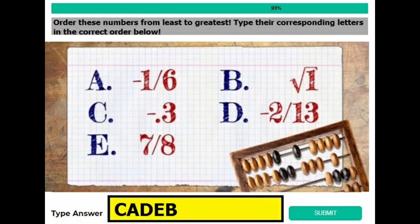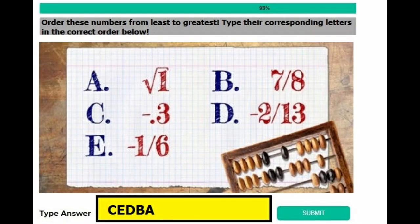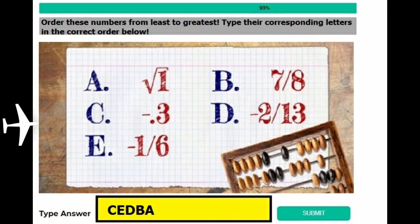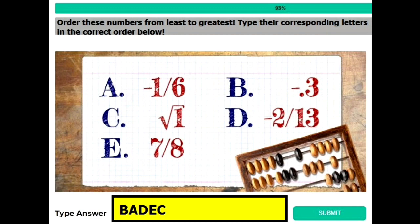For example, in version 1, I have written C as the first letter as minus 0.3 is the smallest, and B as the last as root 1 is the largest number. Similarly, in version 2, I have written C as the first letter as minus 0.3 is the smallest, and A as the last letter as root 1 is the largest number. Similarly for version 3, write as I have shown. There may be more versions — just use your mind.